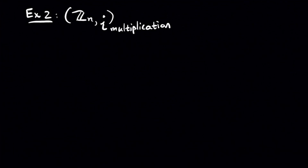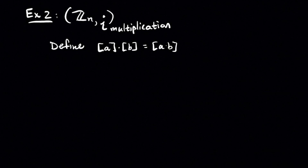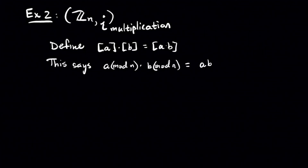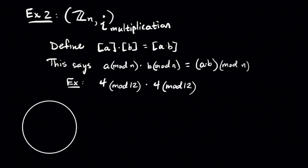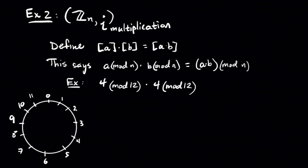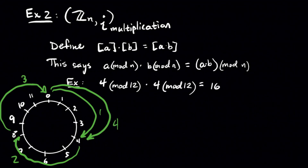In example 2, we'll keep Zn but now consider multiplying equivalence classes in the obvious way — just multiply the representatives. For example, if you want to do 4 mod 12 times 4 mod 12, you just multiply 4 times 4. This says we're going to make 4 clockwise jumps of 4 units, and we land back at 4.